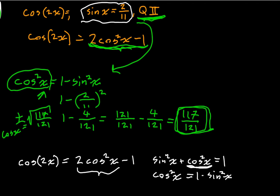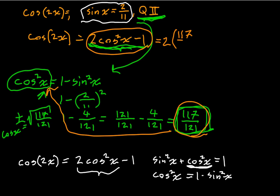Let's plug what we learned into our formula. Cosine of 2x is going to be 2 cosine squared of x minus 1. What's cosine squared of x? That's 117 over 121. So this is going to be 2 times 117 over 121 minus 1. We're going to simplify this a little bit further. What's 2 times 117? It's going to be 234 over 121 minus 1.